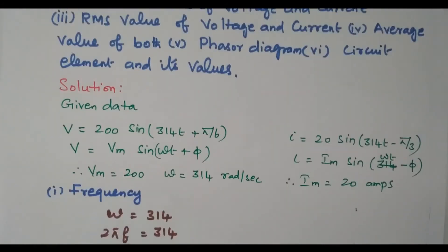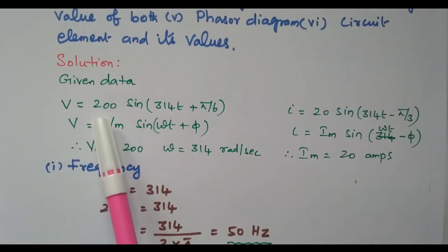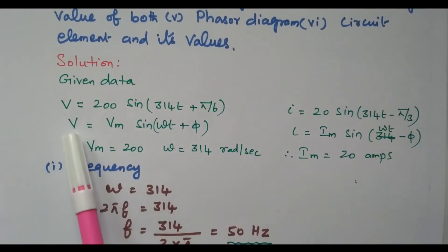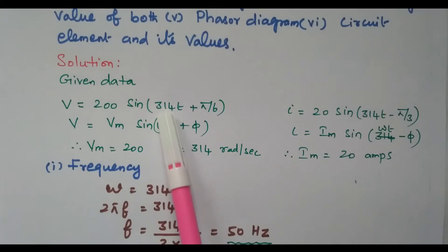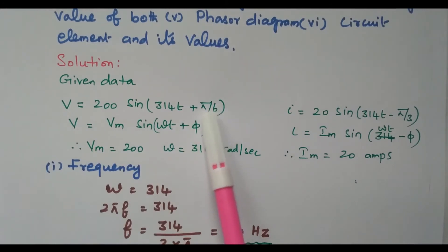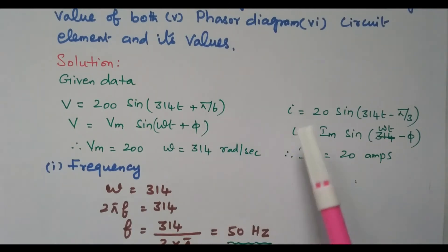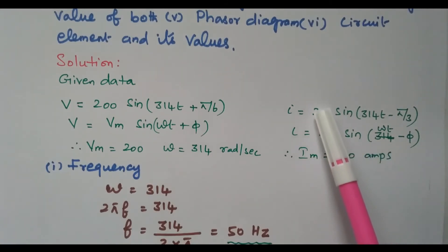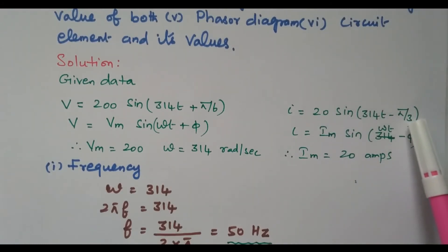From the given data: comparing V = 200 sin(314t + π/6) with the standard form V = Vm sin(ωt + φ), we identify Vm = 200 and phase angle φ = π/6. Similarly, comparing I = 20 sin(314t − π/3) with the standard form I = Im sin(ωt − φ), we identify Im = 20 and phase angle = −π/3.